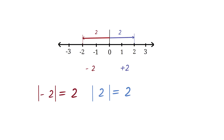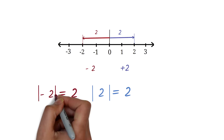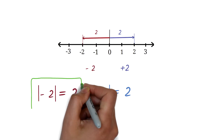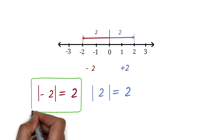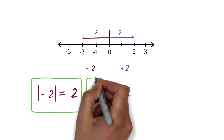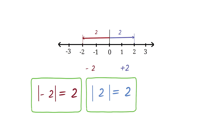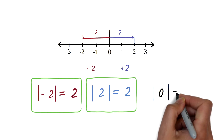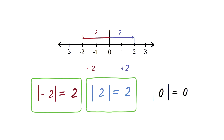Notice that we use these lines to represent absolute values. Absolute value is always positive. The absolute value of a negative number is positive. The absolute value of a positive number is positive. And also the absolute value of 0 is 0.